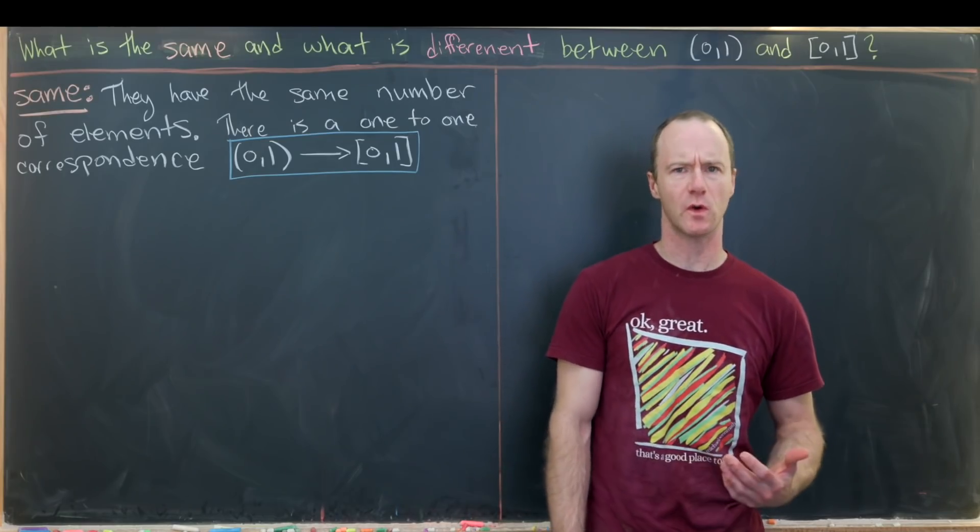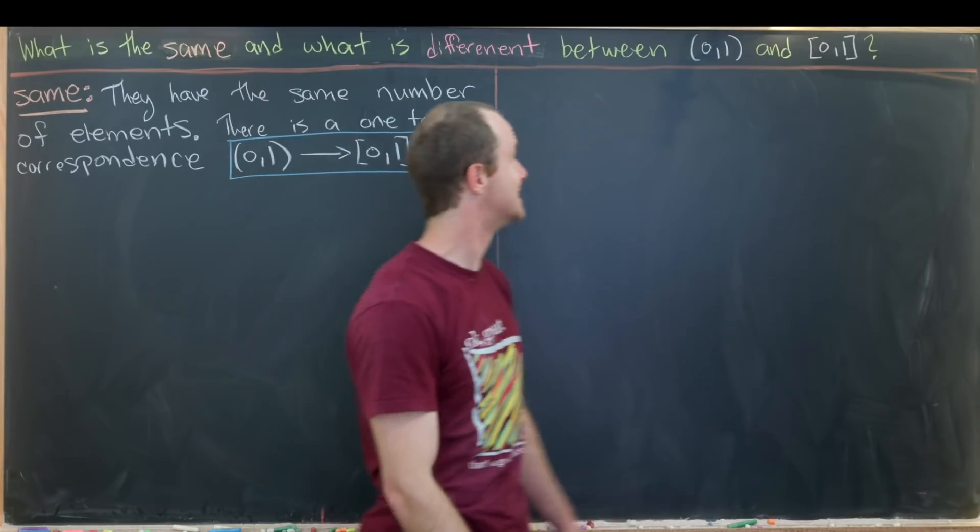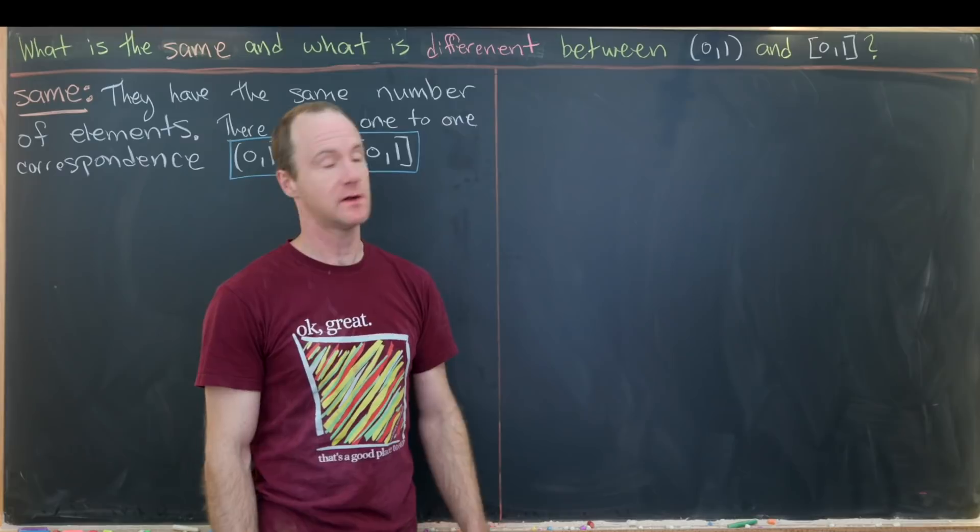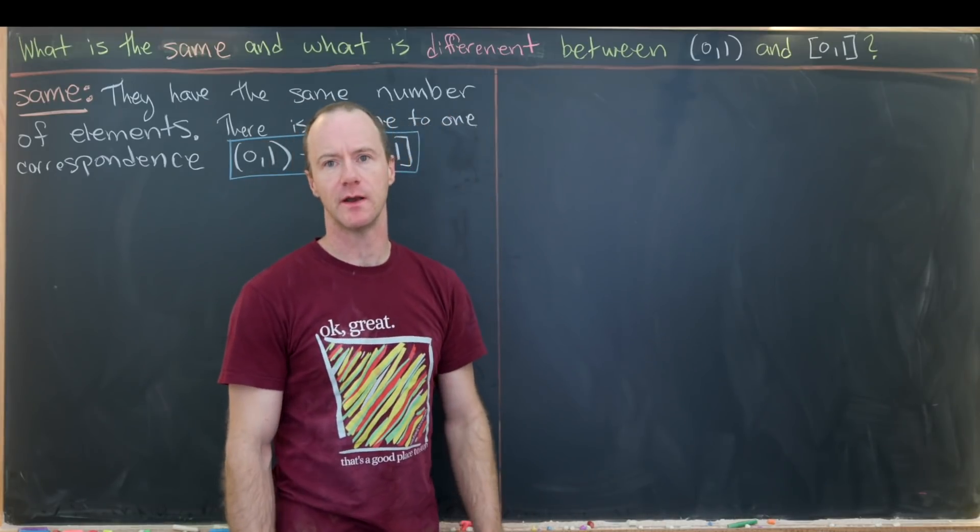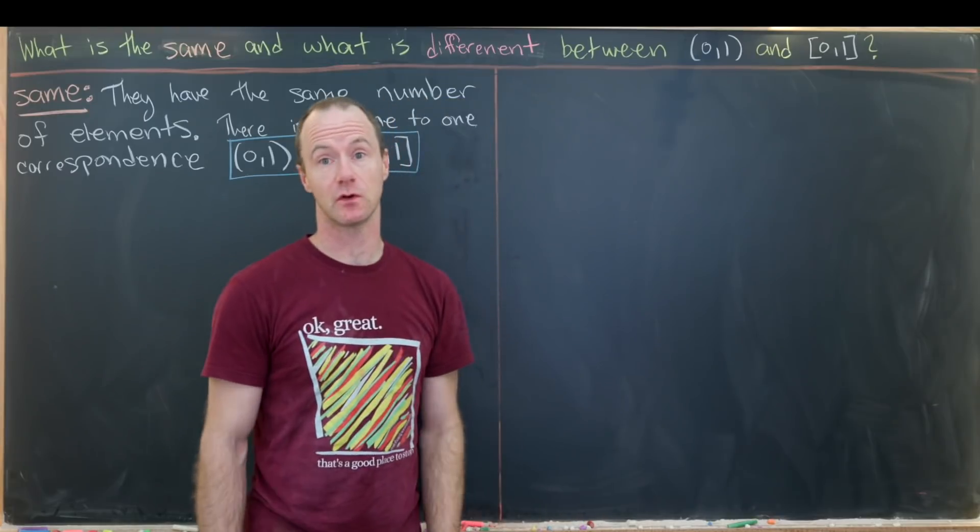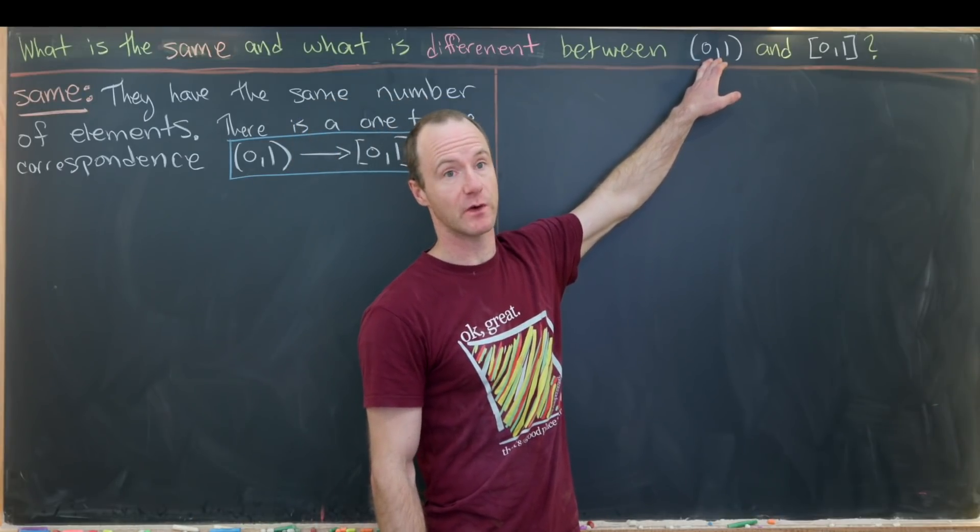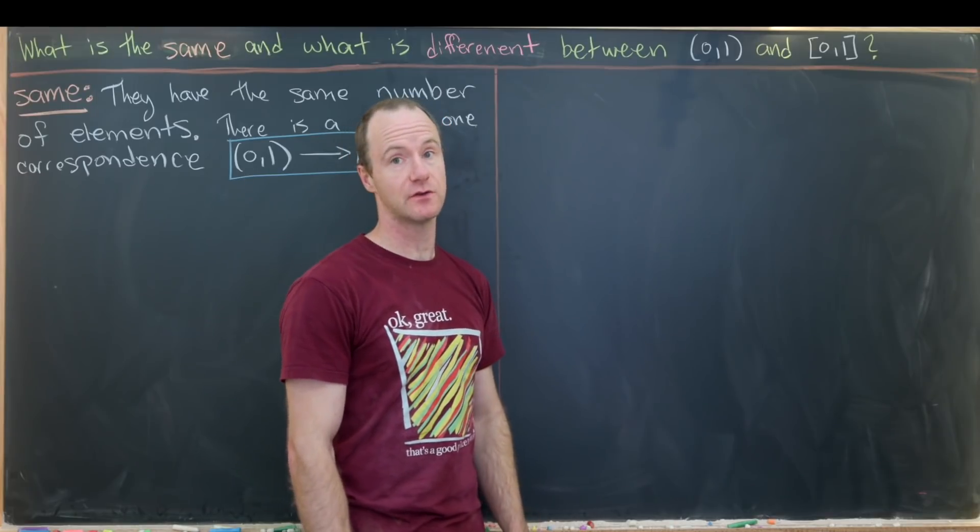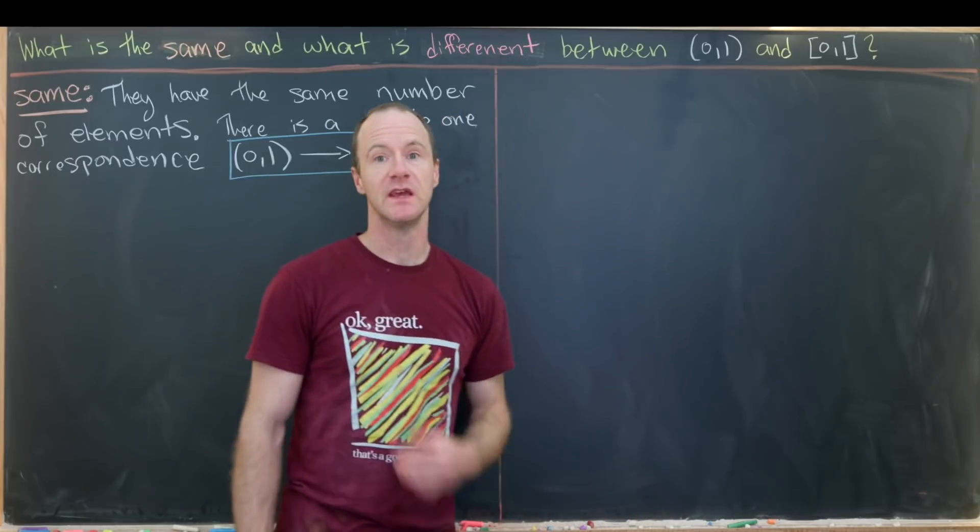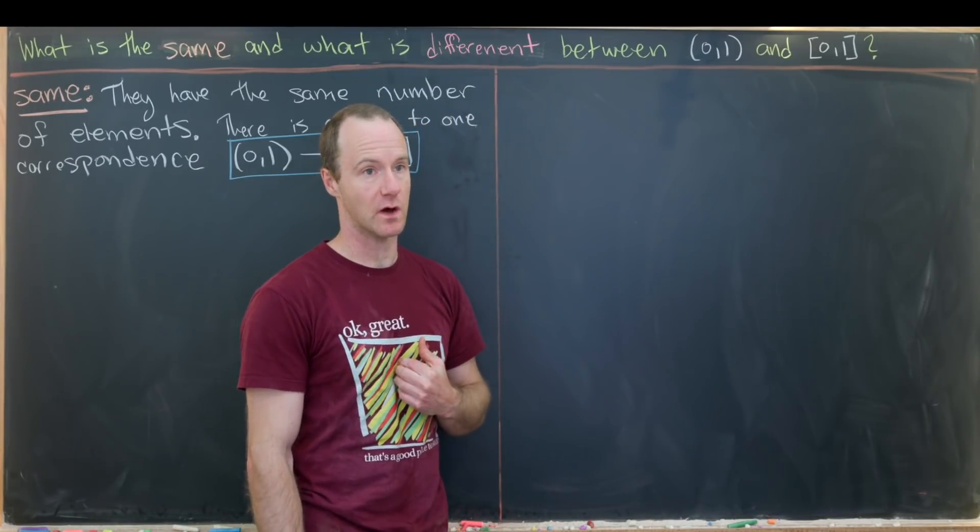Here I've got an interesting video where we're going to explore what is the same and what is different between the open interval (0,1) and the closed interval [0,1]. So let's recall what I mean by these two notations real quick. These are going to be all real numbers between 0 and 1, not including 0 and not including 1. Whereas this closed interval is all points between 0 and 1, including 0 and including 1.